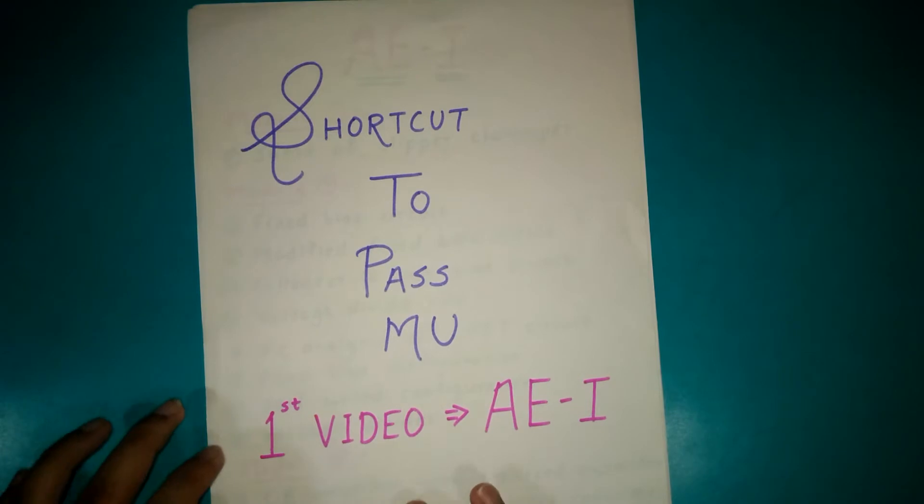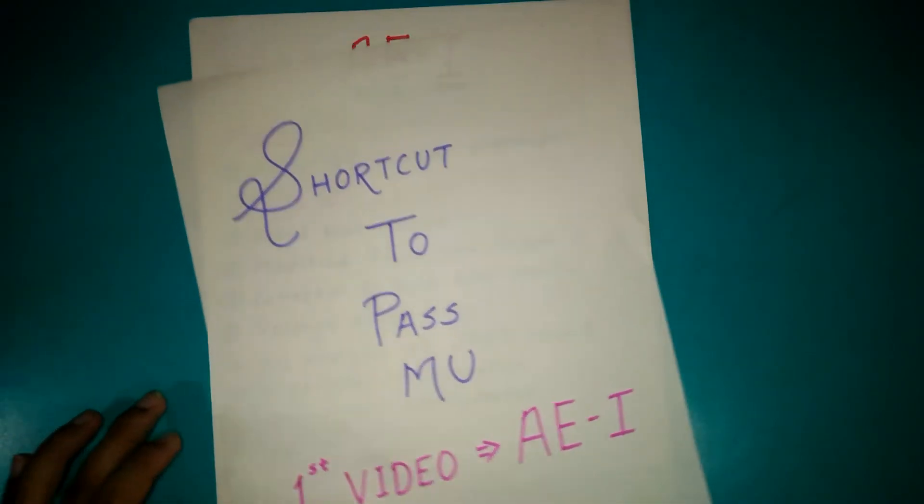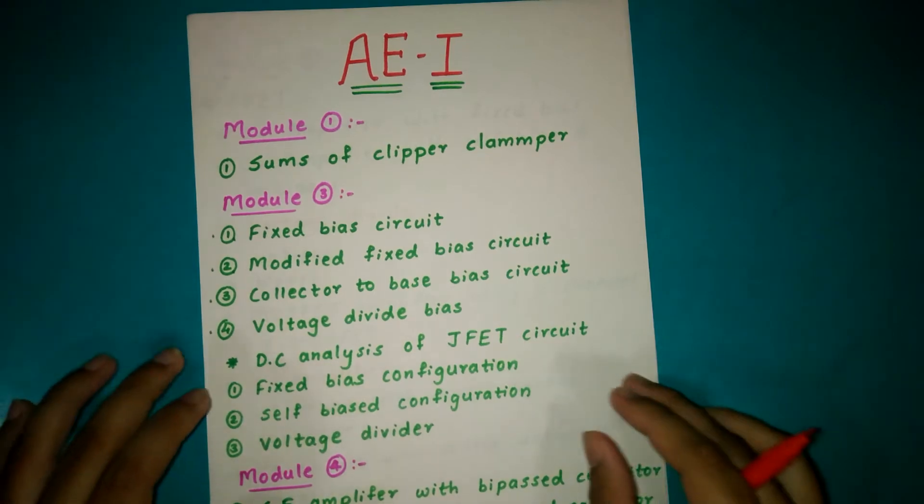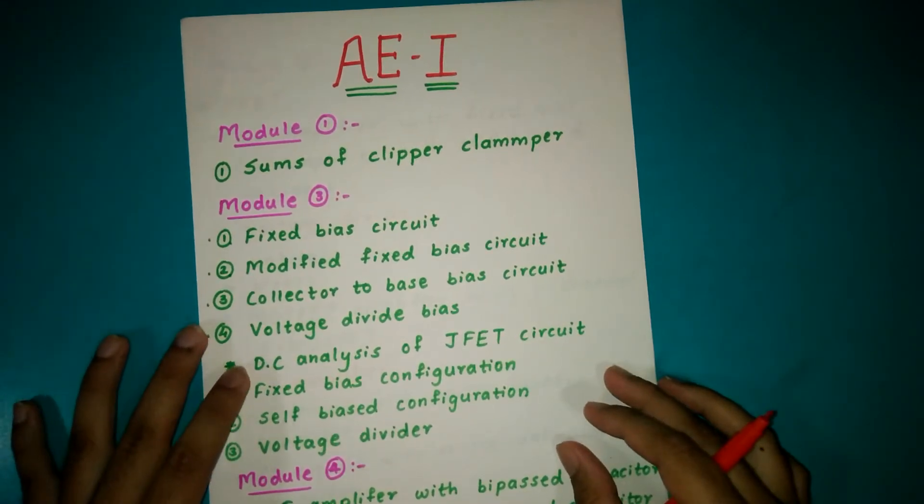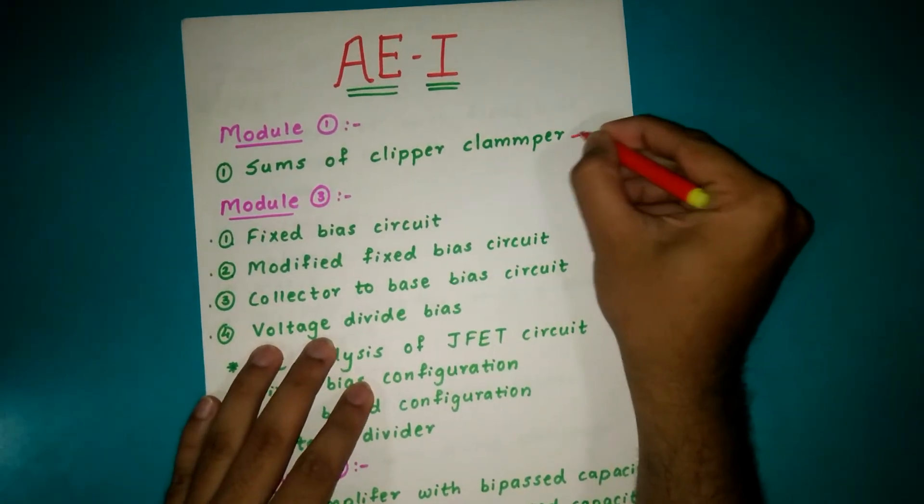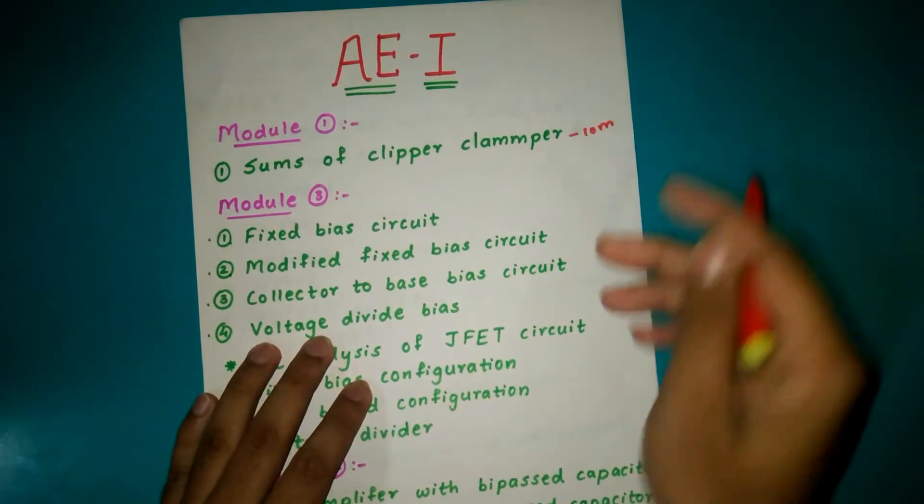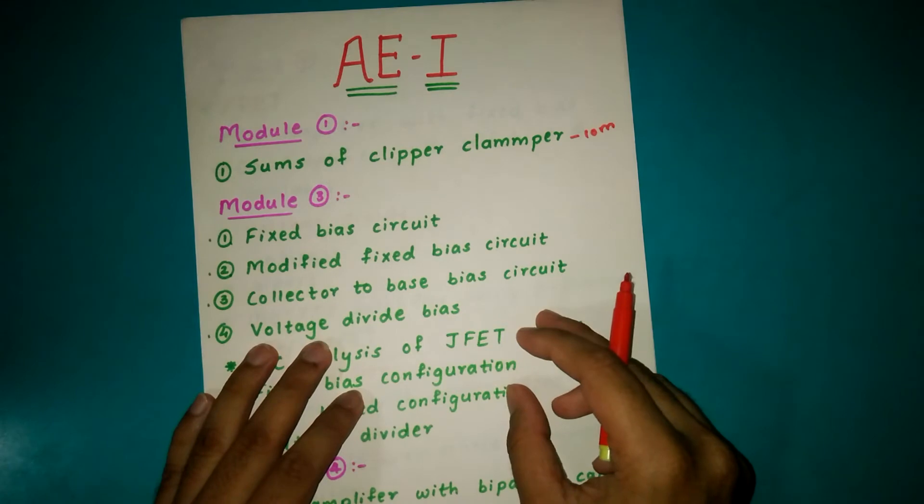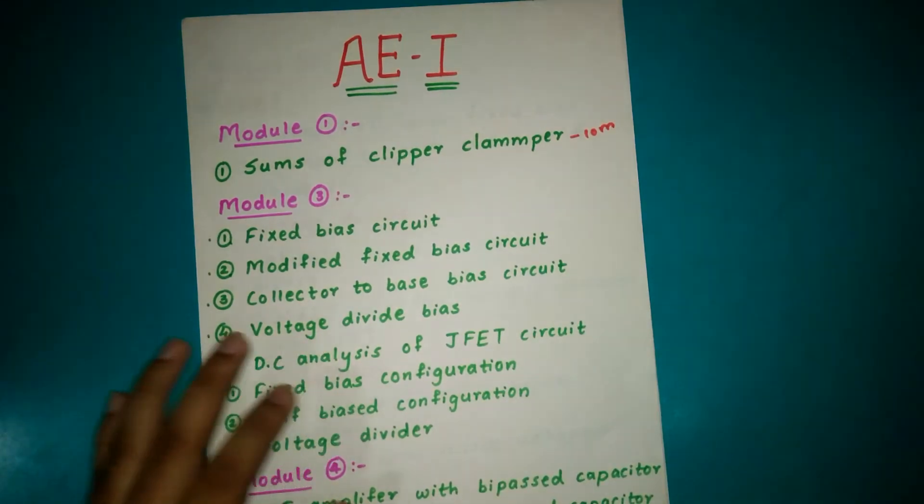We are going to see what all questions you must do module-wise. From Module 1, you must do sums of clippers and clampers, that is of 10 marks. You will get either clipper or clamper for 5 marks each, or you will get both clipper and clamper in one sum as a 10 mark.